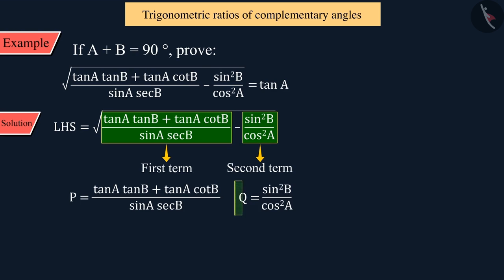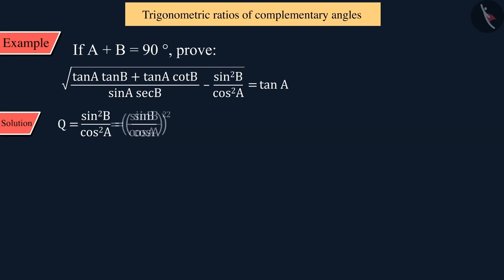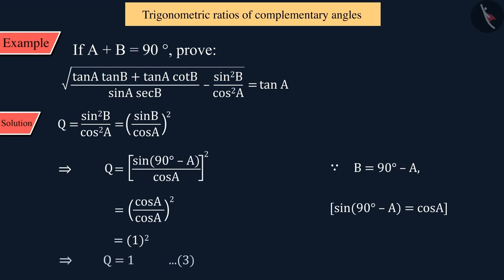Similarly, if we talk about the second term Q, we can write it in the same way. Here, we change sin B to cos A. Solving that, we get the value Q. We can express this as equation 3.